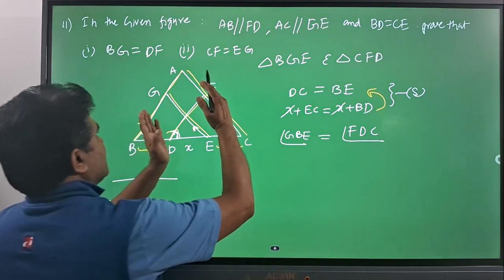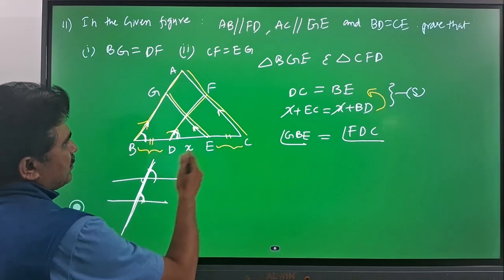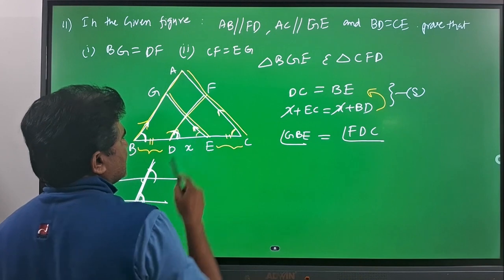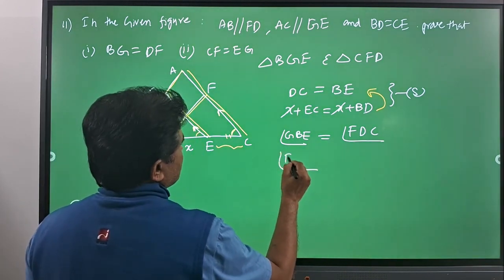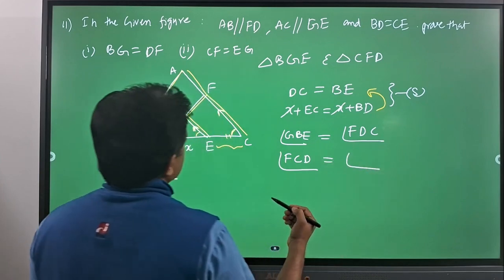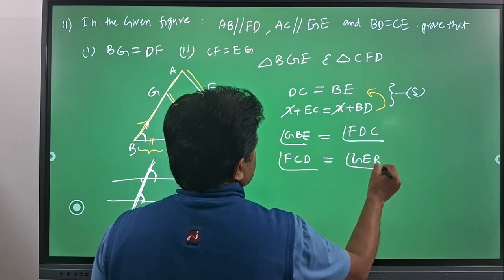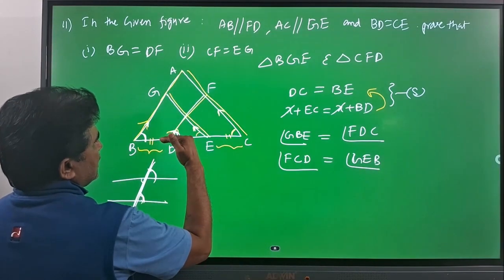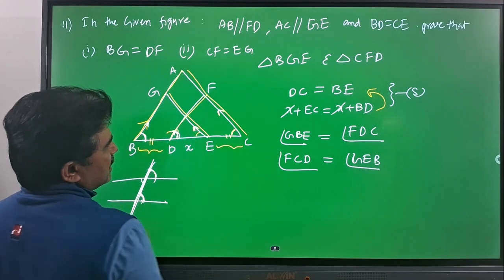It is also given that FC is parallel to GE, so the same rule applies here. The angles at C and E are equal. Specifically, angle FCD is equal to angle ZEB. These two angles are equal.